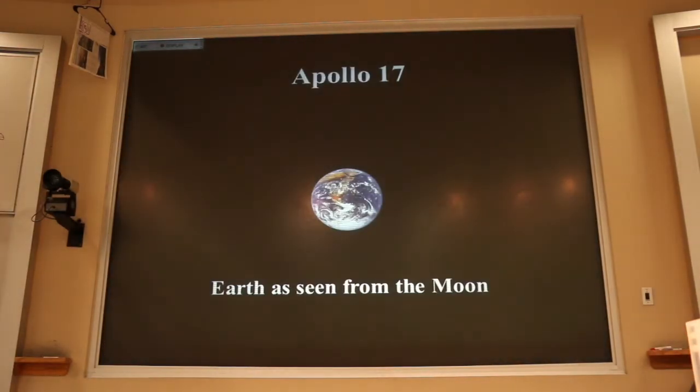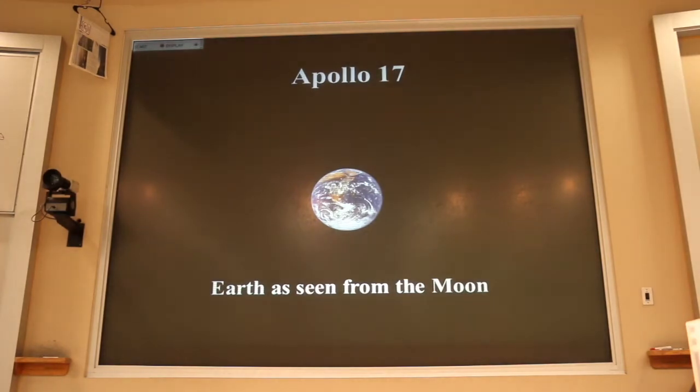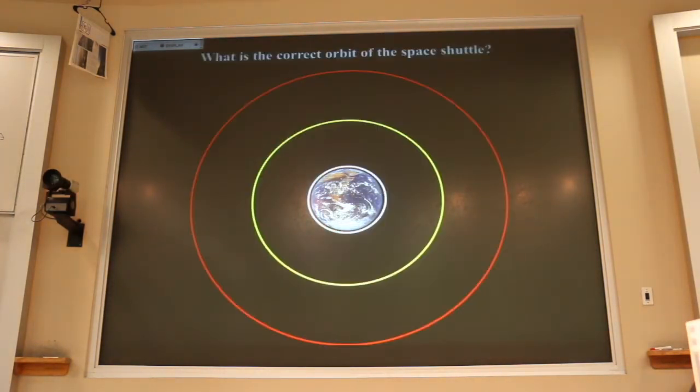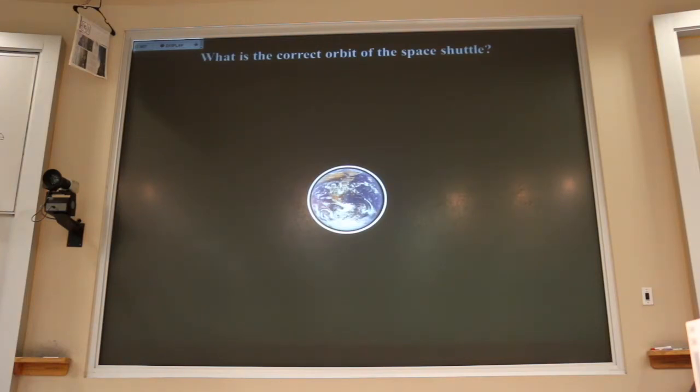If you were to look at the Earth from the moon, assuming that we actually went there and didn't fake the whole thing, which of those circles represents the orbit of the space shuttle? Yeah, the white one. We don't go very far from home.